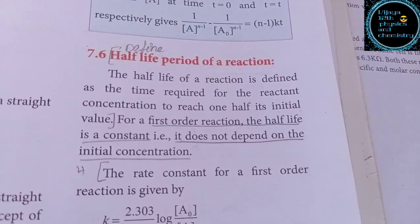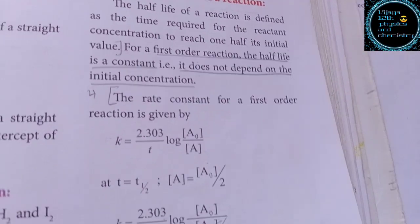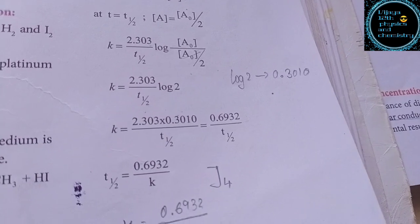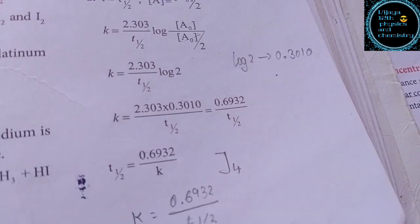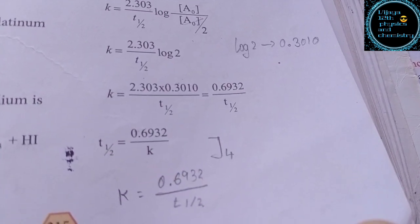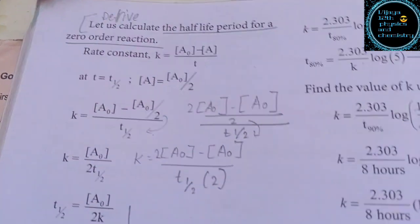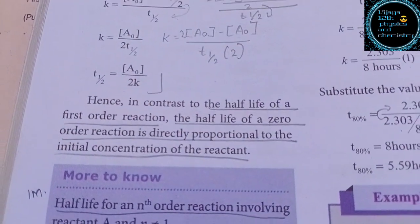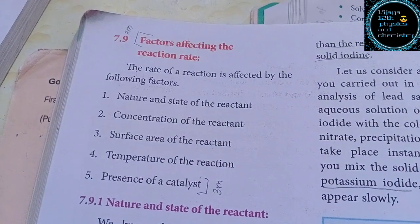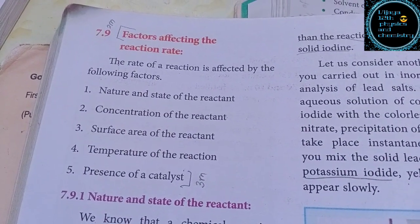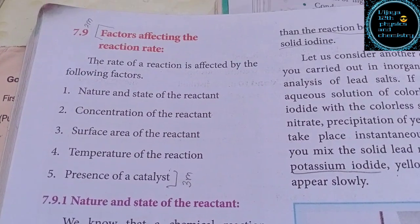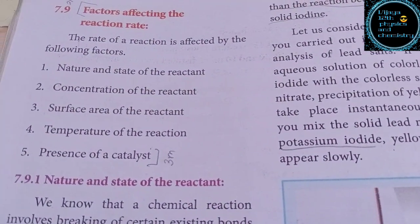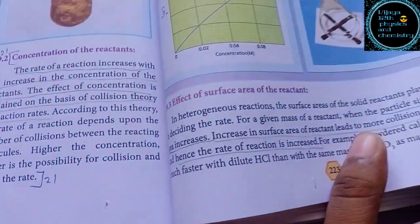Half-life period reactions have problems. If you understand correctly, it will be easier for you to remember. Factors affecting the reaction rate — there are 5 categories. If you have 5 factors, you can explain 2 or 3 factors.